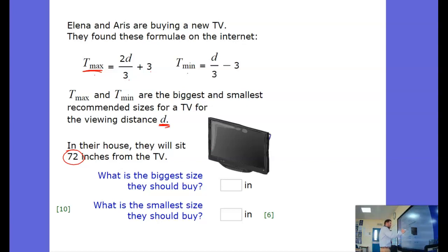So we're going to swap d equals 72 into this formula and into this formula to work out the maximum and the minimum. Into this formula we're swapping the d for the number 72.